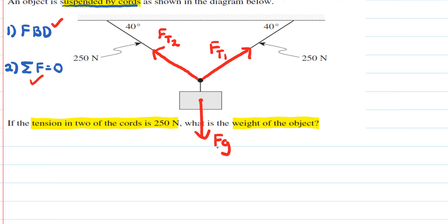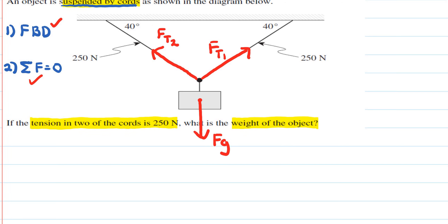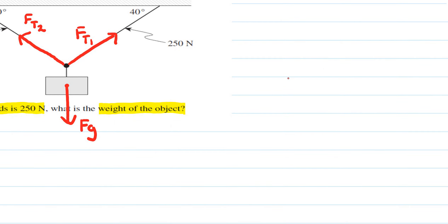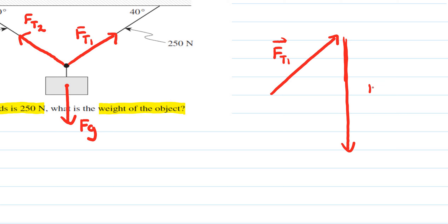There is our free body diagram, and from it we want to go ahead and construct a triangle so that we can use the concept of translational equilibrium. So here's my first tension in the rope, FT1, with a vector. Then we have the force of gravity going down, and then we have our second tension FT2 going in this direction.